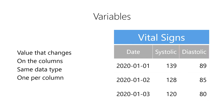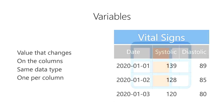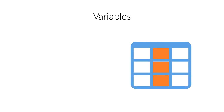Storing each variable in a separate column allows us to store, process, and analyze the data more efficiently. Outside of data science, the columns of a table go by various names. You may simply hear them referred to as columns. In addition, you may also hear them referred to as attributes or, in some cases, as properties. No matter what they're called, variables should always be represented as columns in tabular data.